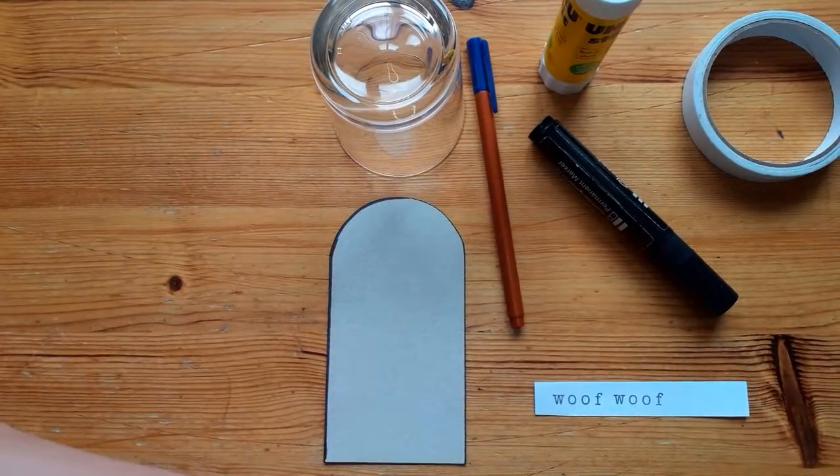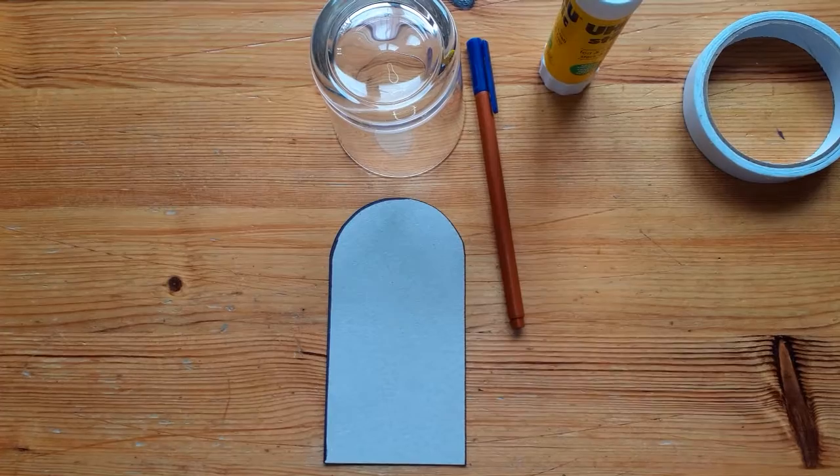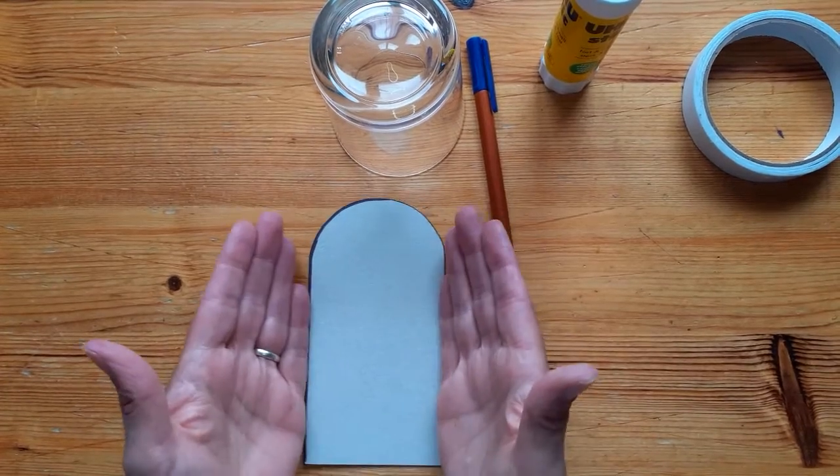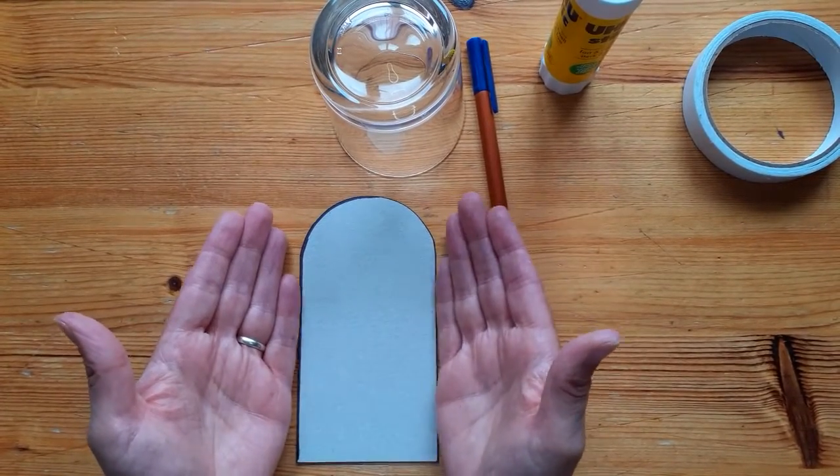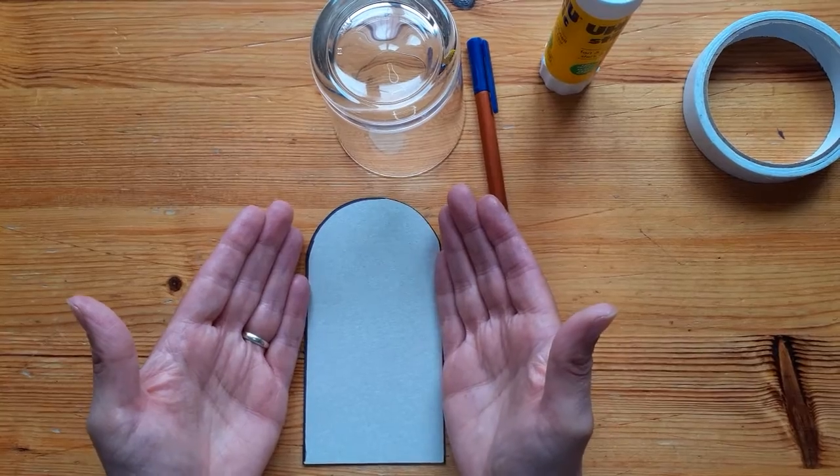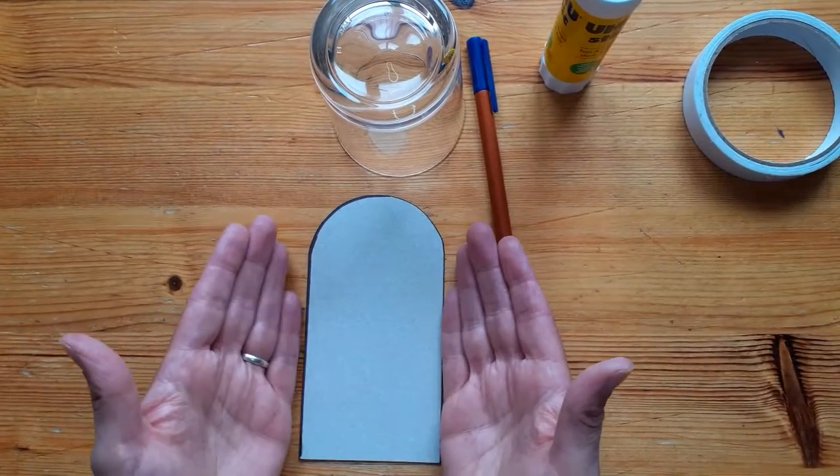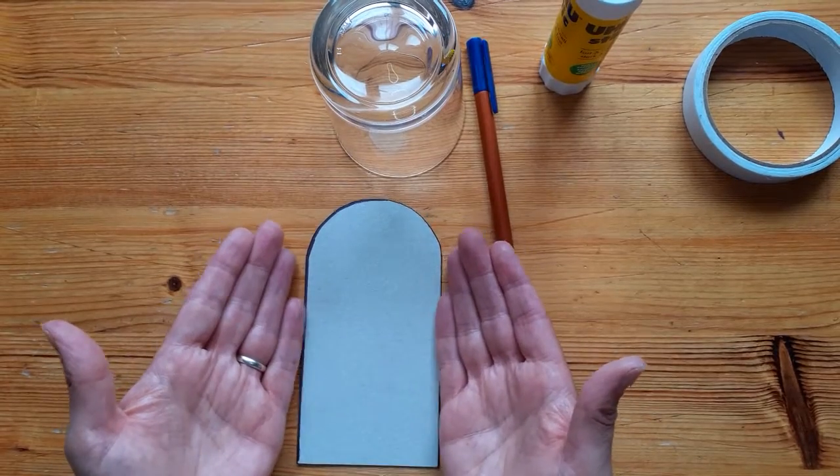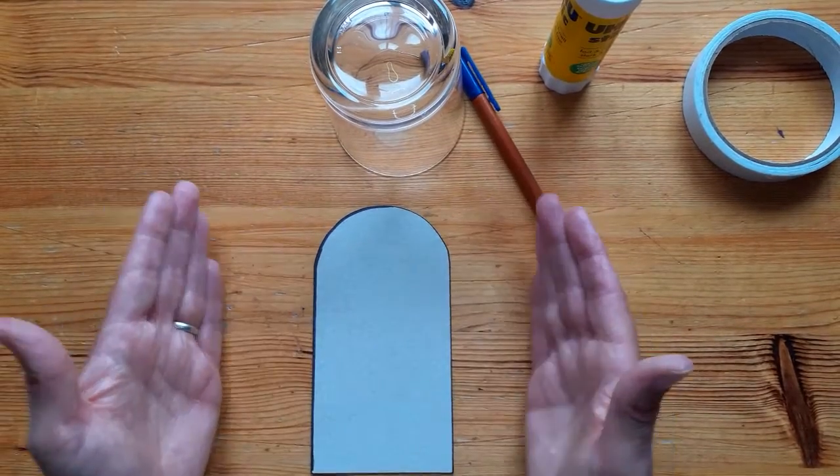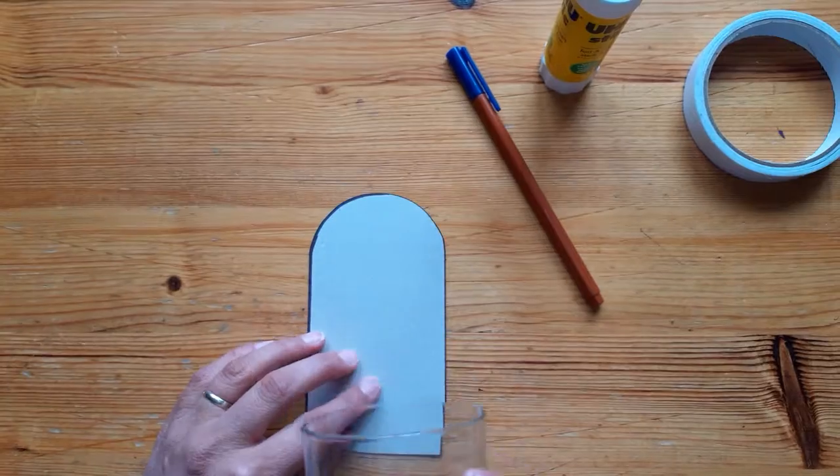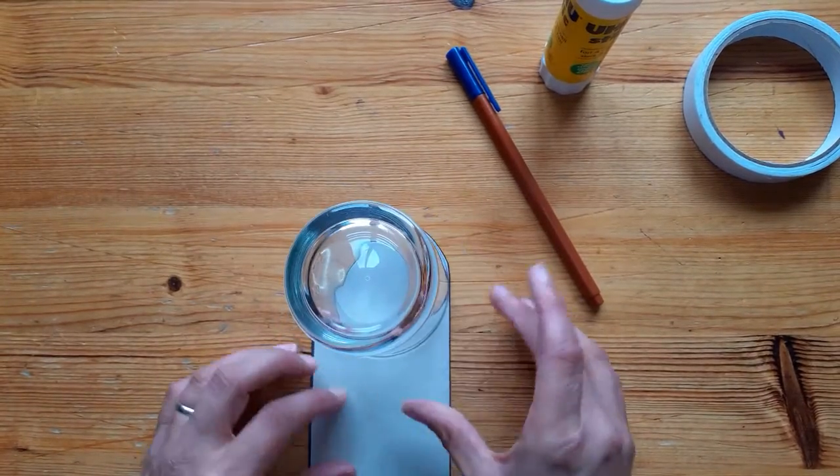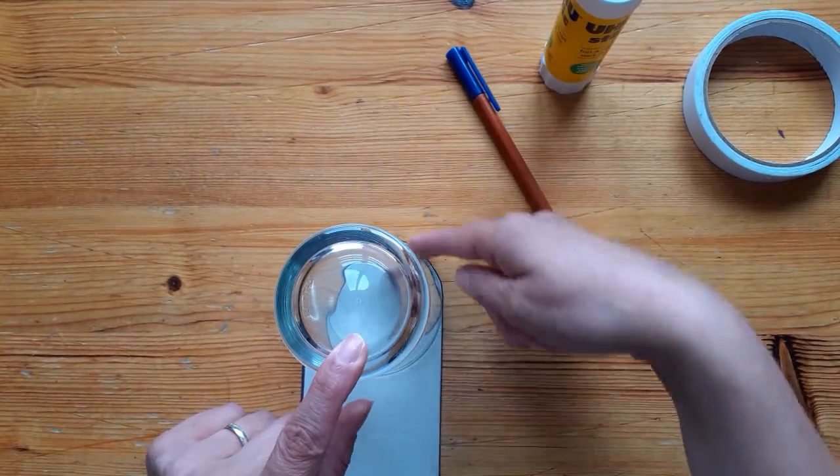Okay so step one is to make the template. So I decided how wide I wanted to make my bell jar. This will probably be individual to you depending on the size of journal you use. So I worked out that about something of this width would fit nicely in my journal without being too big or too small. I then got a glass and used that for the curve at the top, very very easy to do.